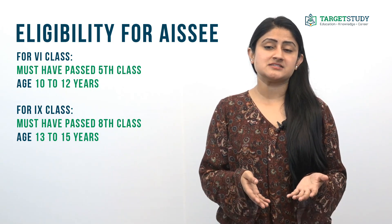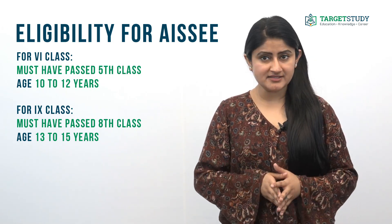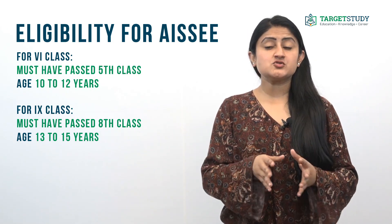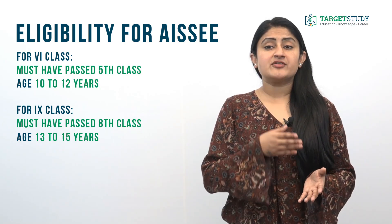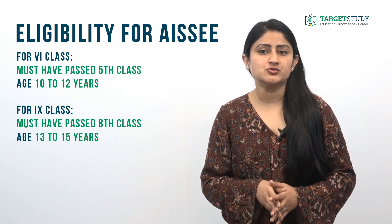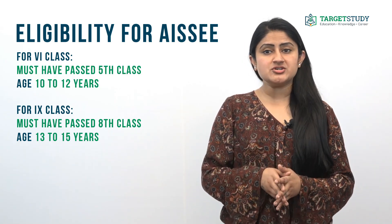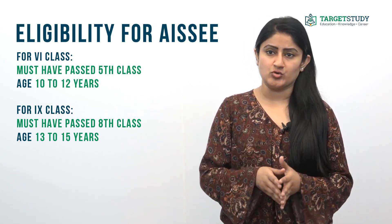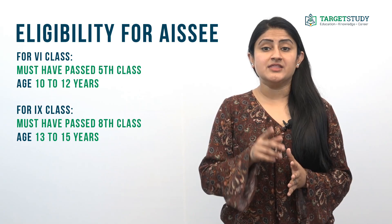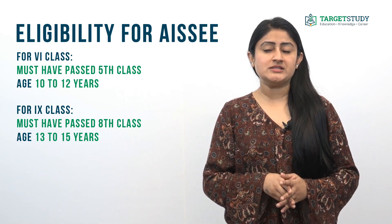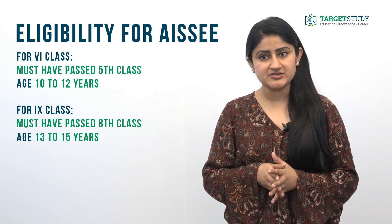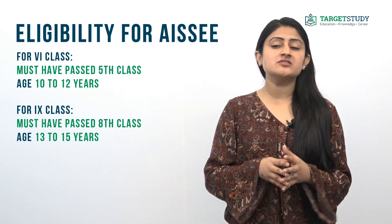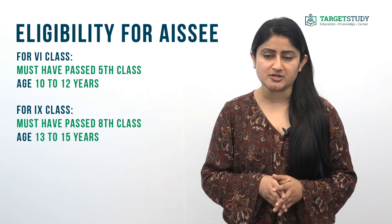Whereas for ninth class, students must have completed their eighth class from a recognized school to get admission in Sainik school, and they should be between the age of 13 and 15 years as on 31st March.